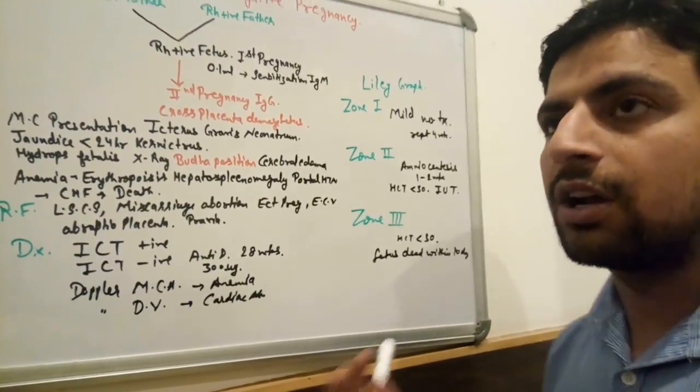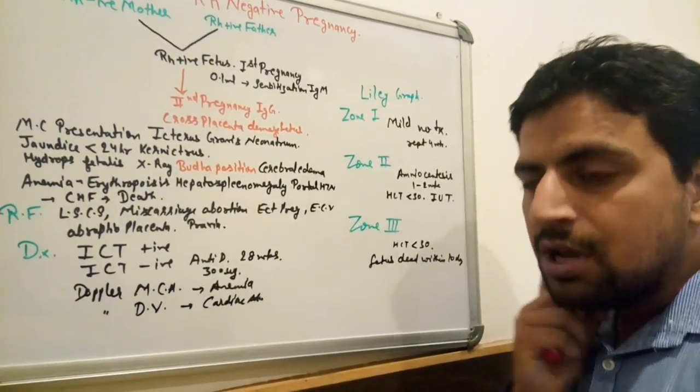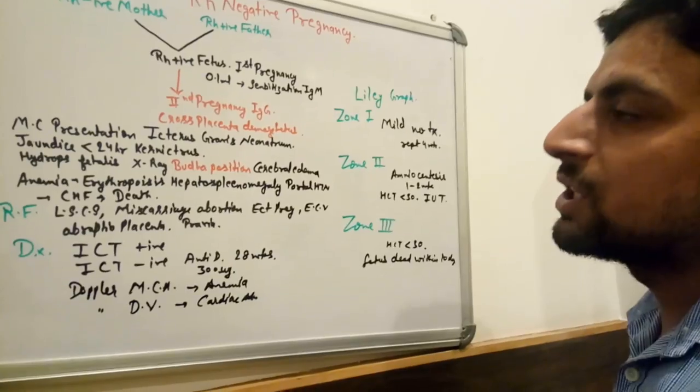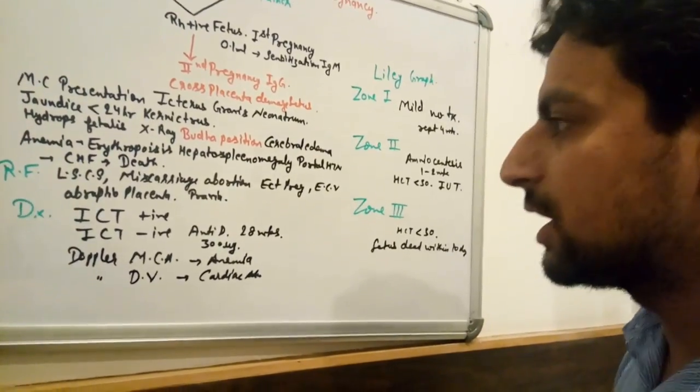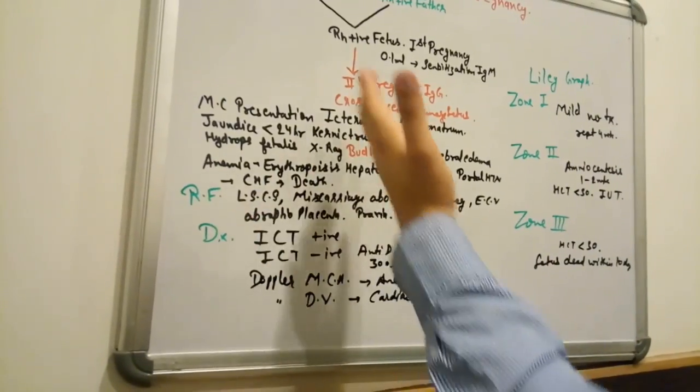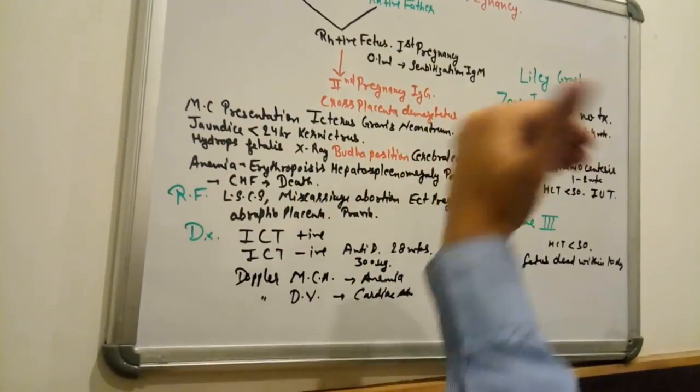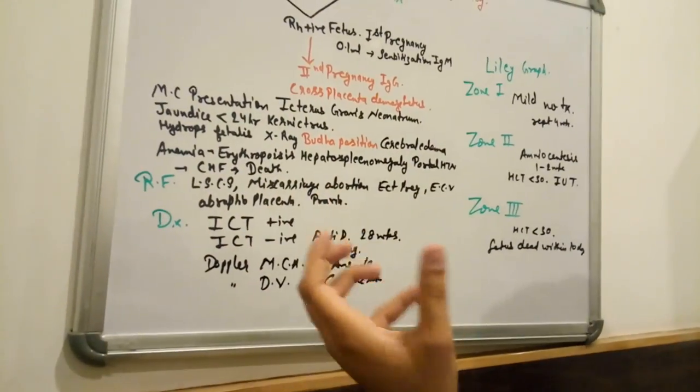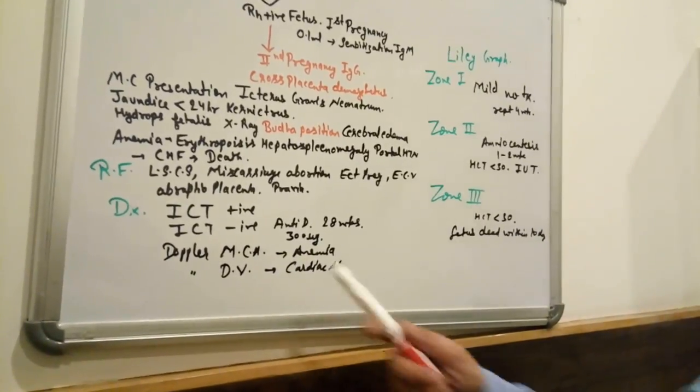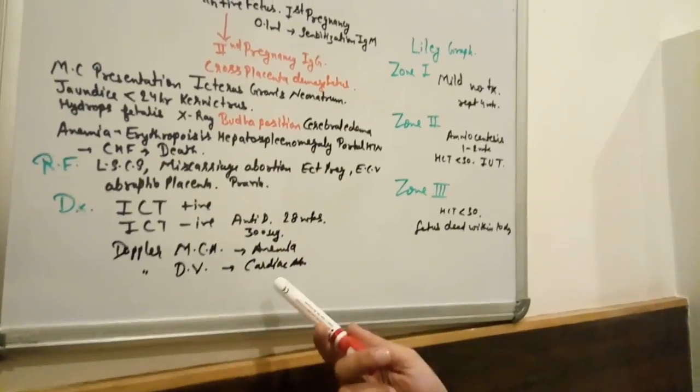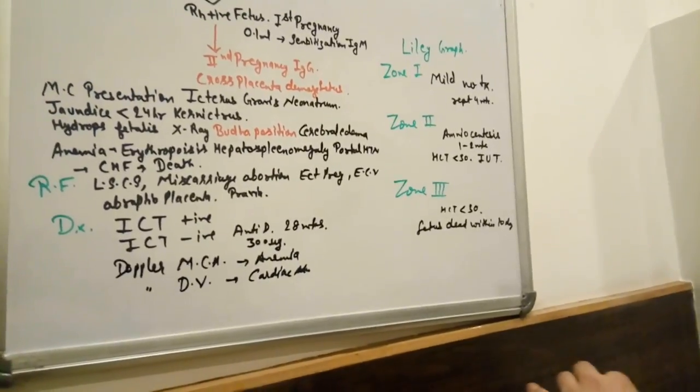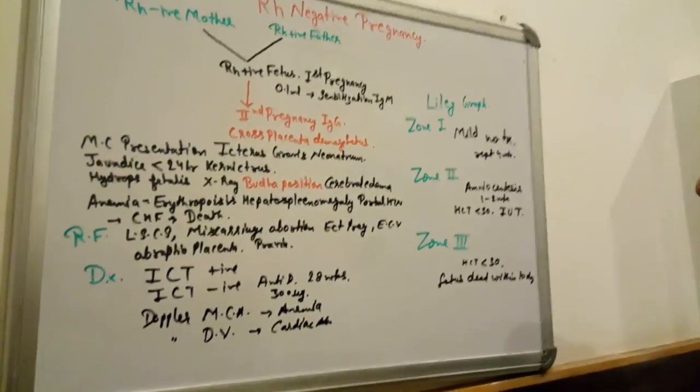We can do such investigation by amniocentesis also, but that is an invasive procedure with risk of damage, like risk factor for having Rh negative antibody development and blood transfusion. That's why we sometimes do these tests also - Doppler MCA for anemia, Doppler DV for cardiac anomalies.